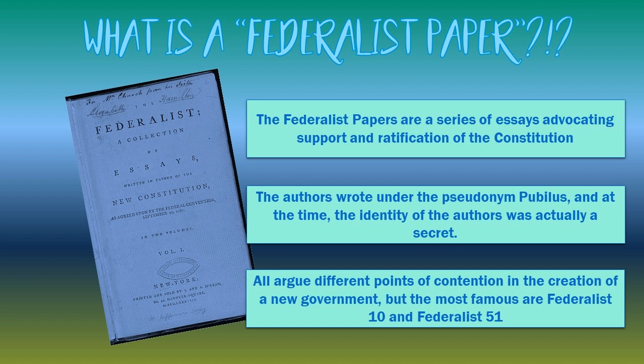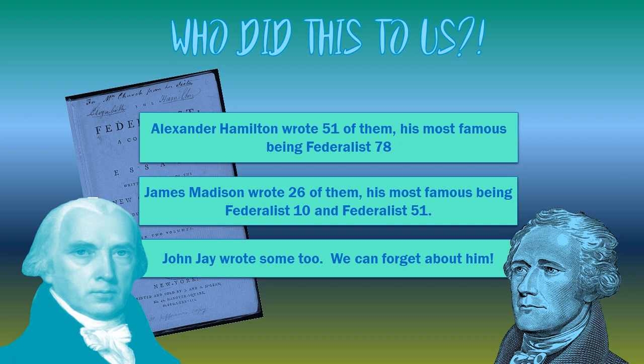The most famous of the Federalist Papers is Federalist 10, and then probably Federalist 51 — those are the two we're going to look at today, and two of the required documents we have to understand for the AP exam. The three main authors are Alexander Hamilton, James Madison, and John Jay. They're arguing in favor of expanded central government and in support of the Constitution. We know James Madison supports the Constitution because he designed it, and Alexander Hamilton advocated for strong central government control.